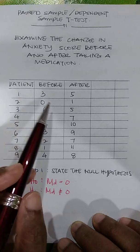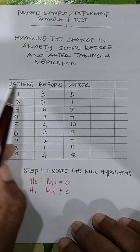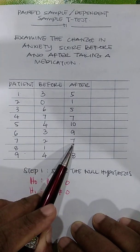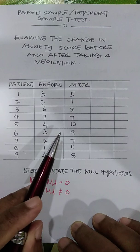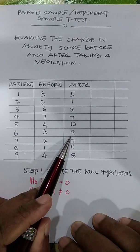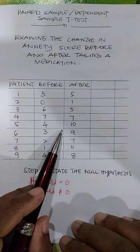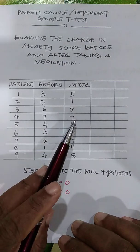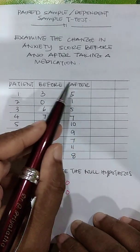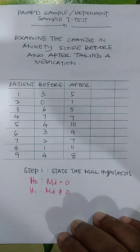What you need to identify here is that you are using the same group of patients, measuring the same information but at different time points. You would like to see if there is any difference before and after taking the medication — is there any change in the score after taking the medication?